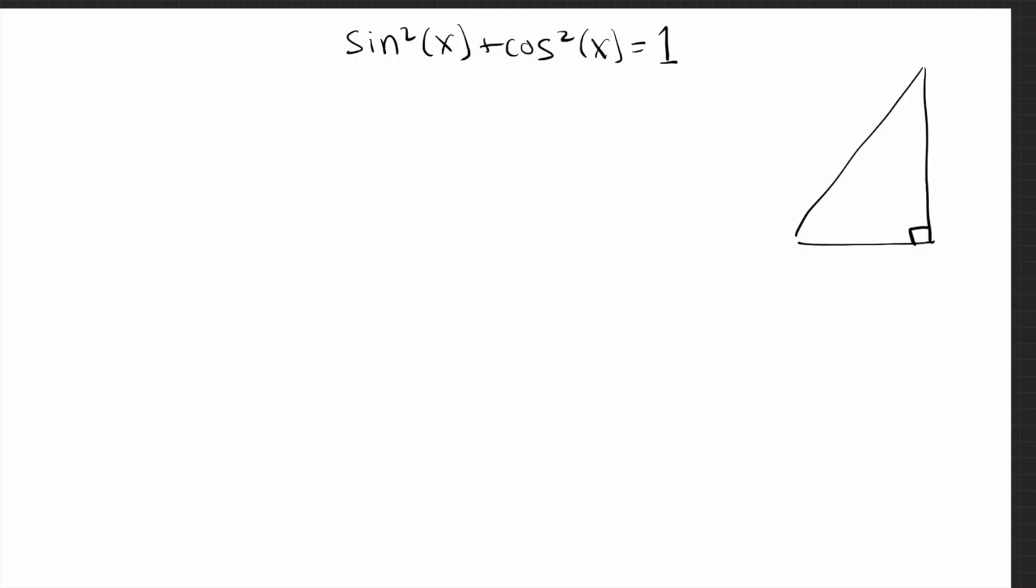The way I'm going to do this, I'm going to start with a right triangle, and I'm going to pick one of the angles and call it x. Let's say this one right there. Now I want to give the sides of the triangle names, so I'll call them a, b, and c. It doesn't really matter what you call them.